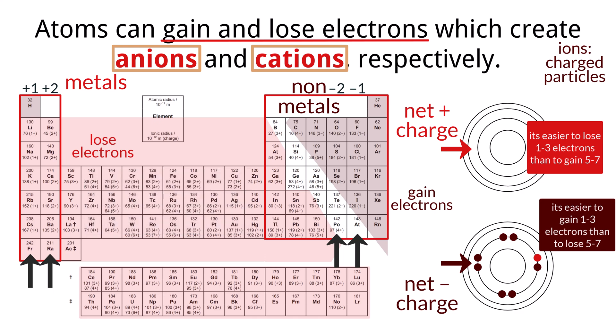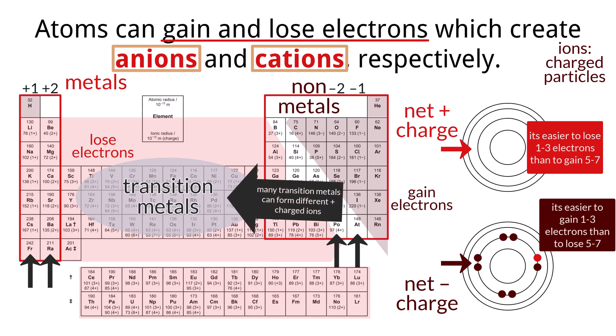Things get a bit more complex when we look at transition metals, which reside in the d block of the periodic table. Unlike main group elements that generally form ions with a predictable charge, many transition metals can form ions with different positive charges. This is because they can lose electrons from both their outermost s orbital and their inner d orbitals.